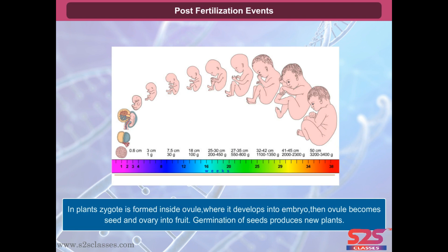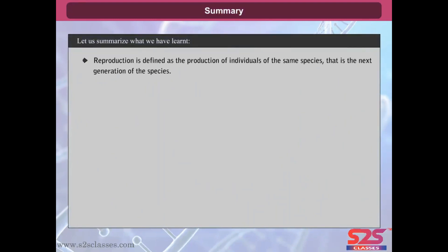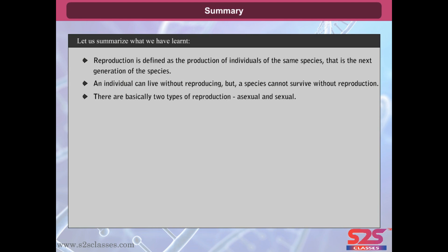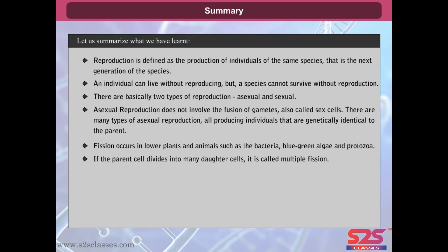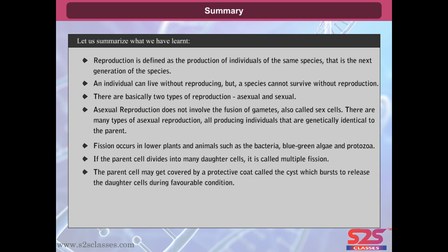Germination of seeds produces new plants. To summarize: Reproduction is defined as the production of individuals of the same species, that is the next generation of the species. An individual can live without reproducing, but a species cannot survive without reproduction. There are two types of reproduction, asexual and sexual. Asexual reproduction does not involve the fusion of gametes. There are many types of asexual reproduction. Fission occurs in lower plants and animals such as bacteria, blue-green algae, and protozoa. If the parent cell divides into many daughter cells, it is called multiple fission. The parent cell may get covered by a protective coat called the cyst, which bursts to release the daughter cells during favorable conditions. Multiple fission is also seen in Chlamydomonas and algae.